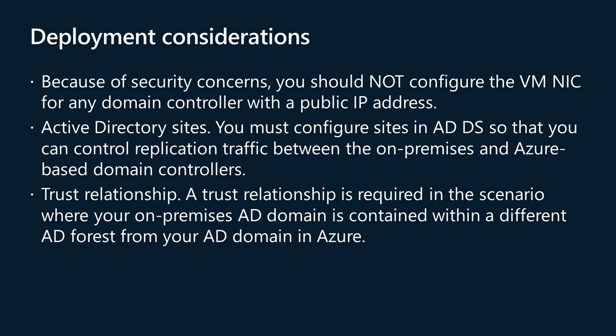A trust relationship is required when your on-premises AD domain is in a different AD forest from your AD domain in Azure. To enable authentication of on-premises users in Azure, the domain in Azure must trust the logon domain in the on-premises forest. You can establish trusts at the forest level by creating forest trusts, or at the domain level by creating external trusts. A forest level trust creates a transitive trust relationship between all domains in the two forests, while an external domain level trust creates a non-transitive trust relationship between two specified domains. Trusts can be unidirectional or bidirectional; a one-way trust enables users in one domain to access resources in another, while a two-way trust enables users in either domain to access resources in the other.